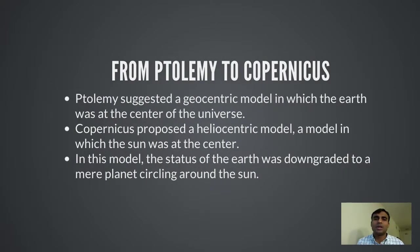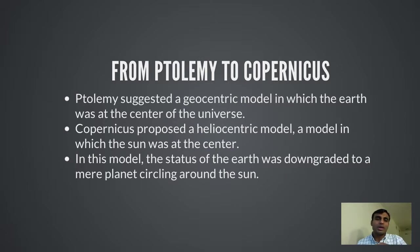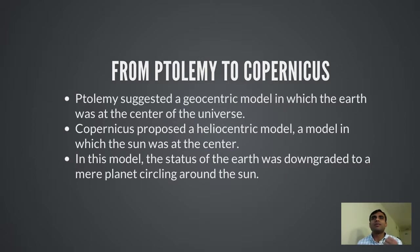A huge deal of work was done from Ptolemy to Copernicus. Ptolemy gave us a geocentric model in which Earth was at the center of the universe while the planets and other heavenly bodies rotated around it. Copernicus gave us a much different model in which the sun was at the center and Earth went around the sun just like the other planets did.